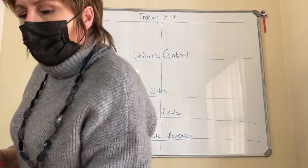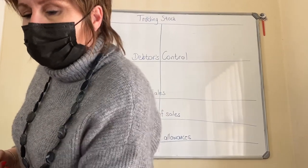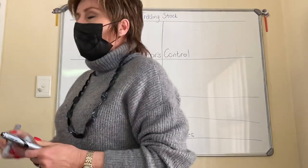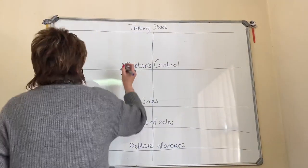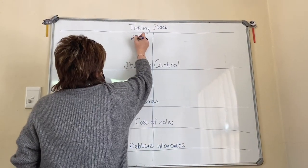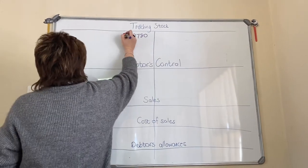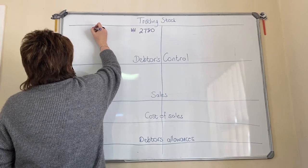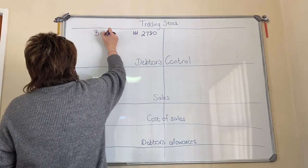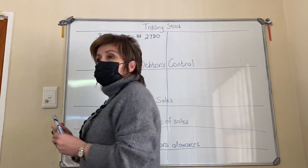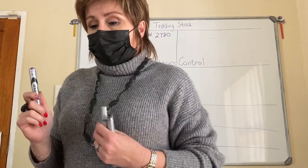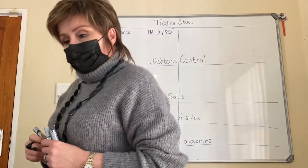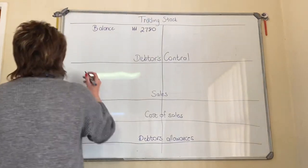The first thing you do is look at your opening balances — those are balances coming from previous months, transactions that have already happened. You've got to know your rules: trading stock and assets have debit opening balances. A lot of you use the word 'balance' whenever you want to — you can't use the word 'balance' unless it's an opening balance coming from the previous month.